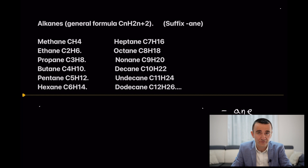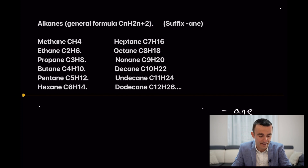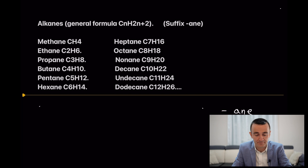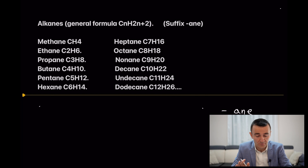The first ten alkanes you need to memorize. They are composed using Greek-derived prefixes — meth, eth, prop, but — indicating the number of carbons. For example: methane (1 carbon), ethane (2 carbons), propane (3 carbons), butane (4 carbons), then pentane, hexane, heptane, octane, nonane, decane. You need to memorize this; there is no other option.